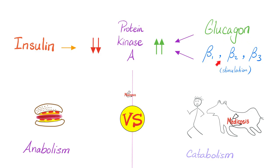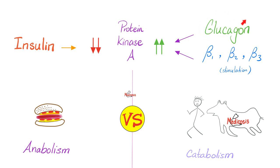If you remember the sympathetic nervous system, beta receptors were also GS-coupled — also boosting cyclic AMP and protein kinase A. In that sense, glucagon and beta receptors are family; they are analogous. Why does this make sense? Suppose you're running from a tiger — sympathetic fight-or-flight. You need catabolism: your heart needs to beat faster and stronger, your bronchi need to dilate, you need metabolism: proteolysis, lipolysis, glycogenolysis, gluconeogenesis. Bingo — that's why they share the same mechanism.